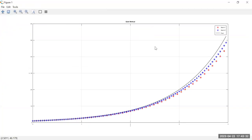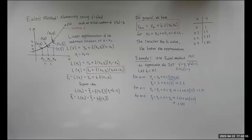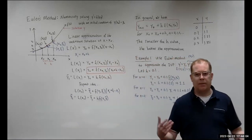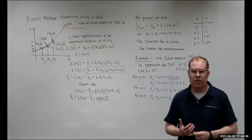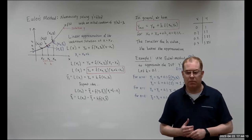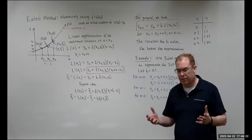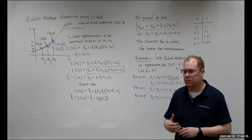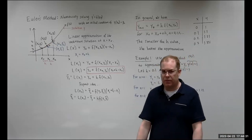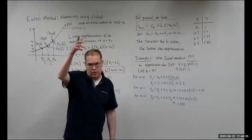Euler's method is a robust and easy-to-implement technique. If time permits, I'd like to discuss the Runge-Kutta method, which gives an even better approximation but is more involved. In numerical analysis, if you want better results, you have to provide more information and more effort. I'll stop here — take care, and see you next time.